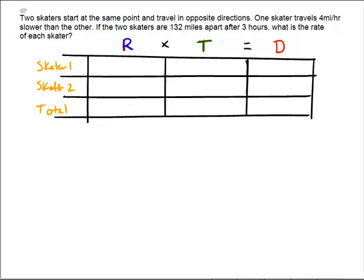Okay, so first, rate. What is the rate of the first skater? Well, it says that one skater travels 4 miles per hour slower than the other one. We actually don't know the rates of the skaters. But we could call one of them x, because we don't know what it is, and we know that the other one is 4 miles per hour slower than that one. So, I'd call that one x minus 4. One of them is x, one of them is x minus 4.